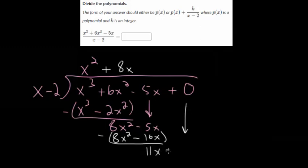And we can bring down the constant term, the plus 0, so that we have a placeholder so that when we do our subtraction, it does make sense. And we ask, what do we multiply x by to get 11x? And we can multiply by 11.